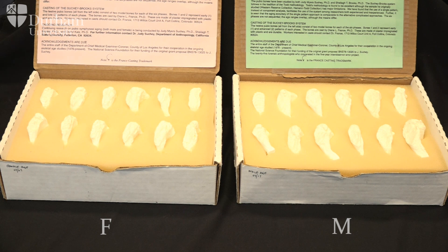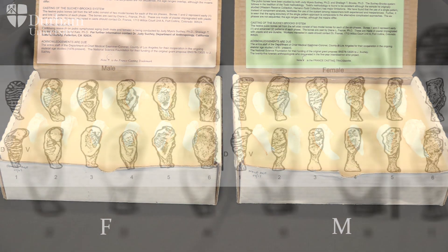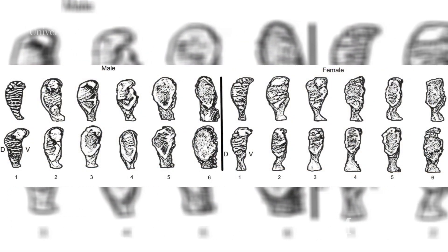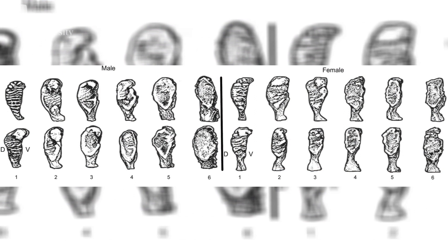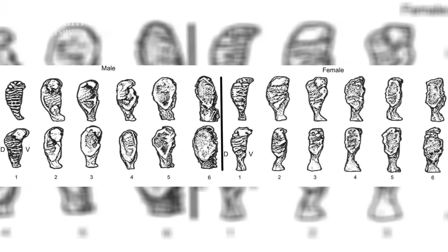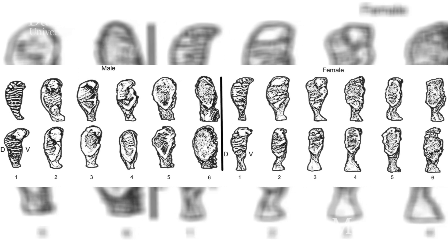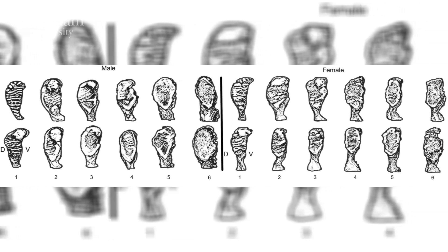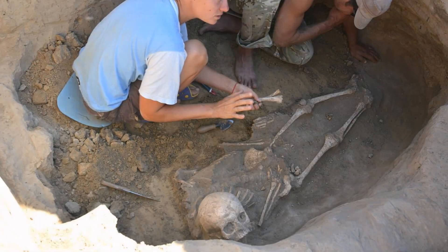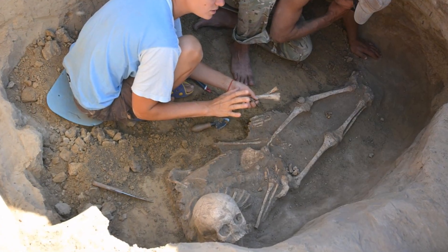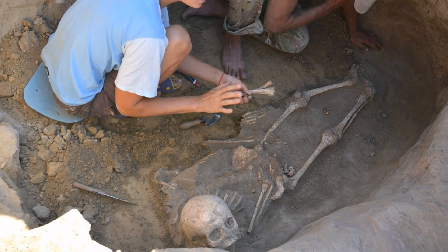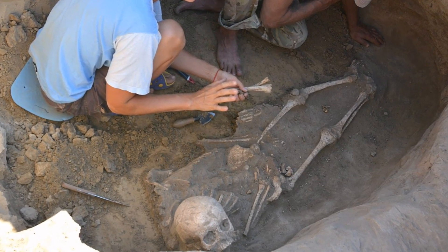There are a couple of limitations with the method. Some have argued that once the ventral rampart has formed, between about 30 to 40 years, the method is less reliable. The key limitation for archaeological and forensic cases is that it doesn't survive very frequently, because it's a fragile bit of bone. When the skeleton is lying on its back it's quite exposed, so often it's knocked off completely or very abraded and difficult to use.